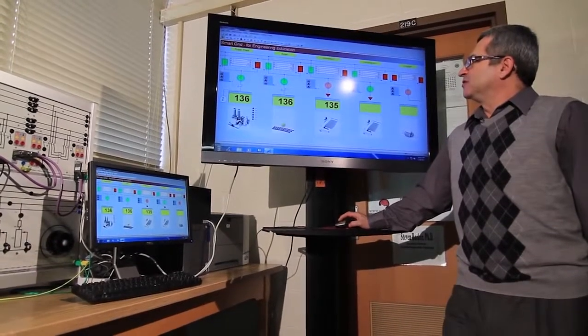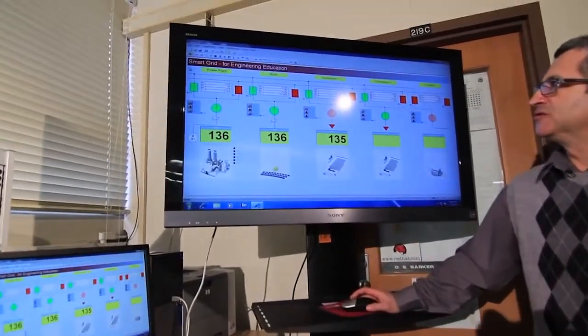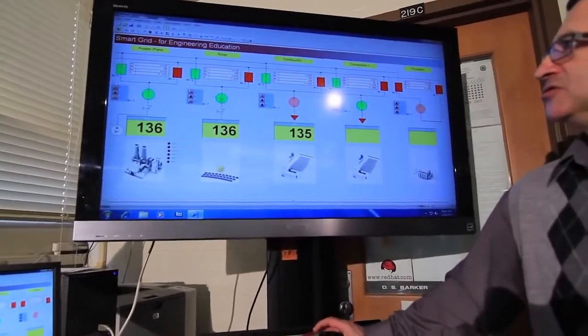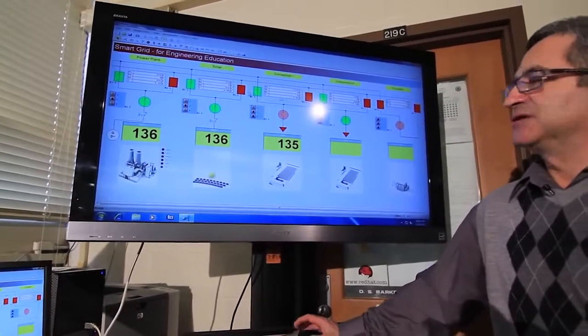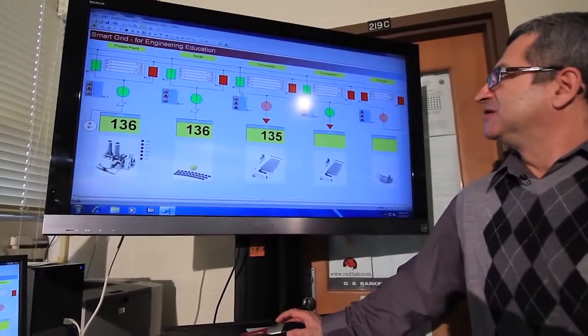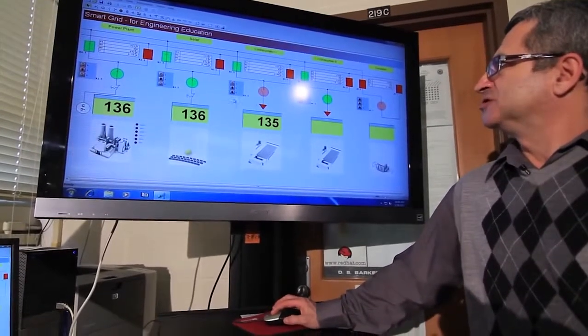So for example right now the power is coming from the utility to the bus bar, from the solar power plant to the bus bar. And then we have several consumers connected to these buses. Let's say here is an industrial plant and we want to launch this plant.